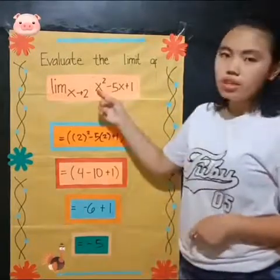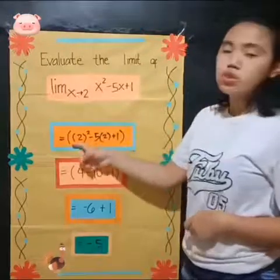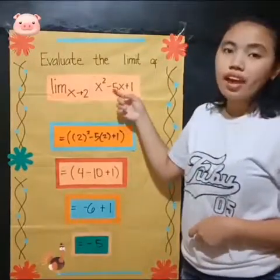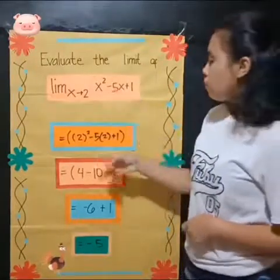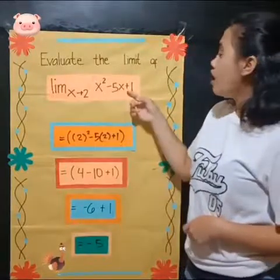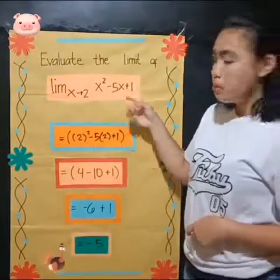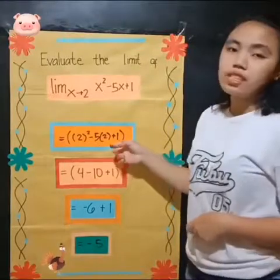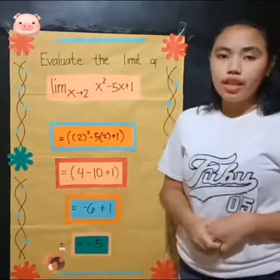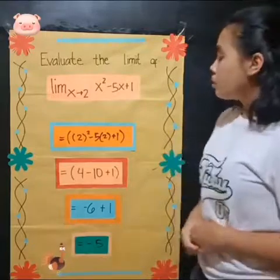Our x squared will be 2 squared, and negative 5x will be negative 5 times 2, and our positive 1 will remain as positive 1 because it's already in its constant form.